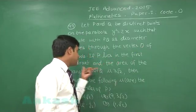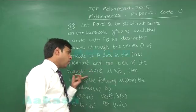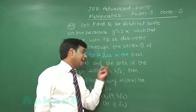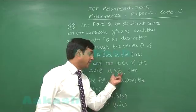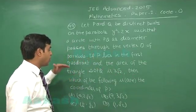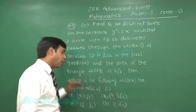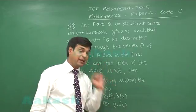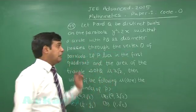If P lies in the first quadrant and the area of the triangle OPQ is 3 root 2 square units, then which of the following is or are the coordinates of the point P? Four options are given. Let us start.